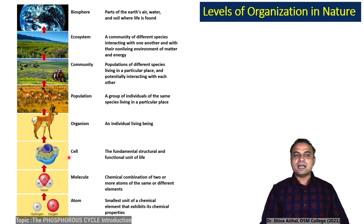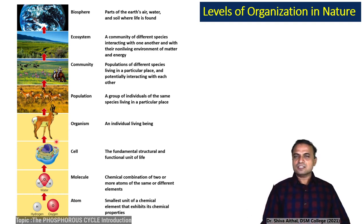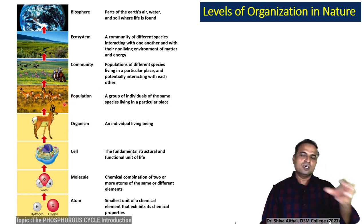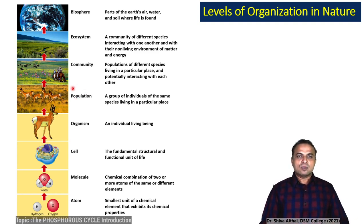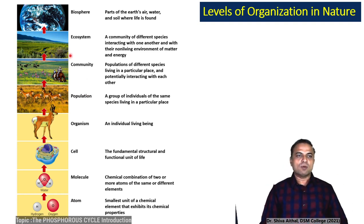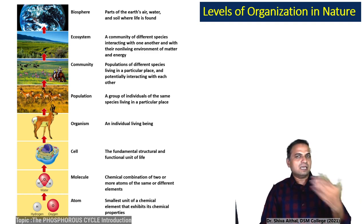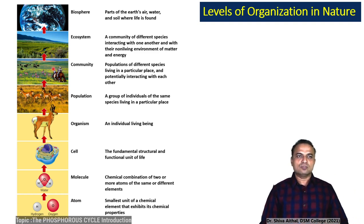When cells organize, they give rise to organisms. There is one more level — cell organelles. Systematic organization of organelles results in an organism. These organisms then have a geographical distribution; they come together to form a population. Populations of different species living in a particular place and potentially interacting with each other form a community. Communities can be of humans, plants, animals, and so on.